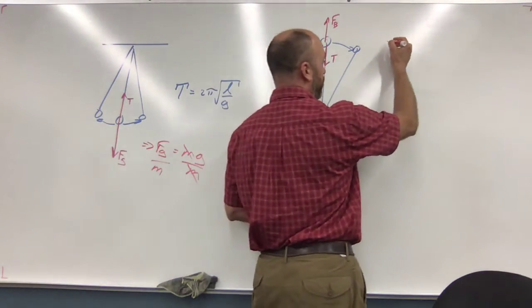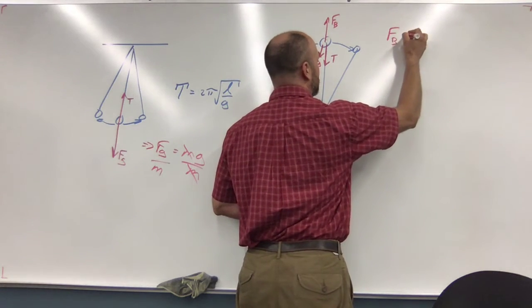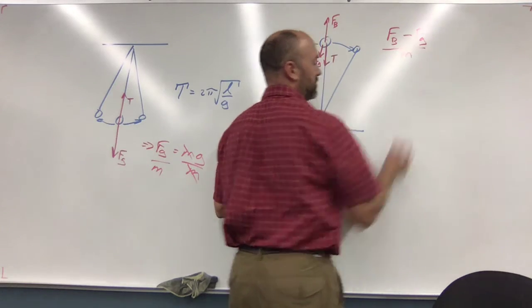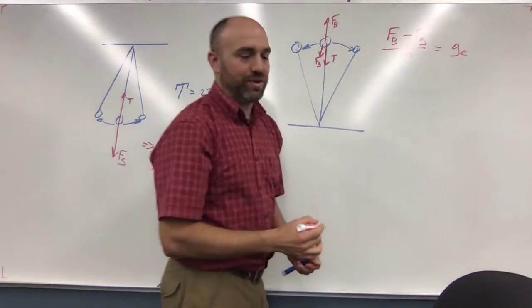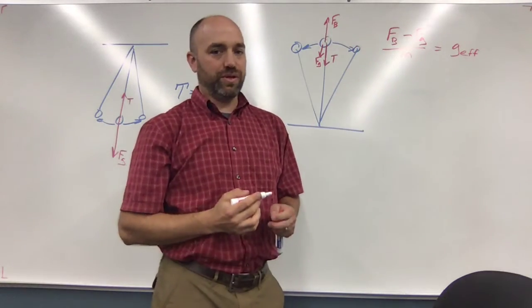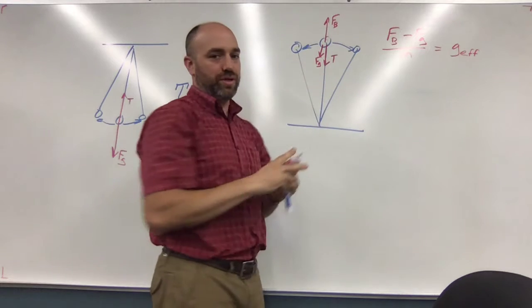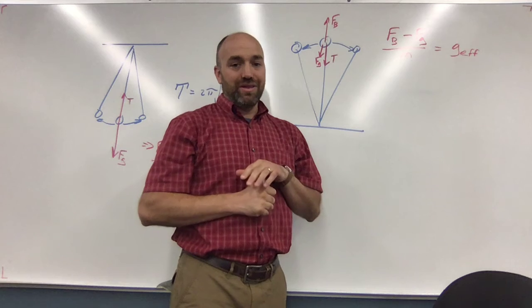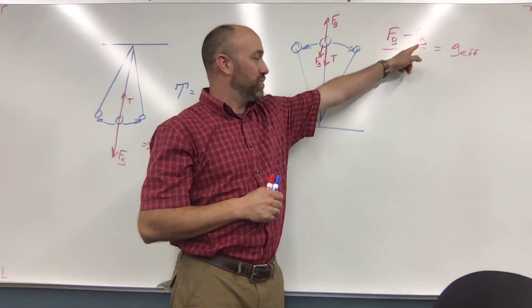Well, we'll get there. Hold on. What we want to do here is the same thing - we want to do everything except the tension. So we're going to do force of buoyancy minus force of gravity divided by mass. That's going to be our effective gravity, g_eff. It's the acceleration of this balloon if you snip the string.